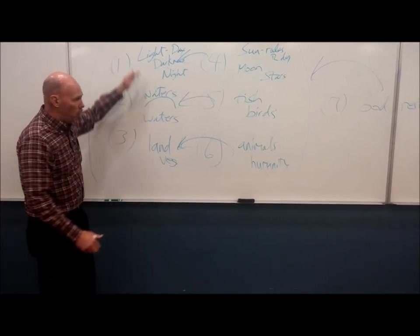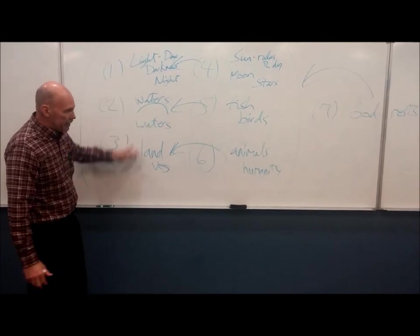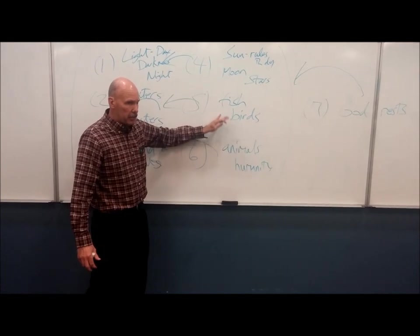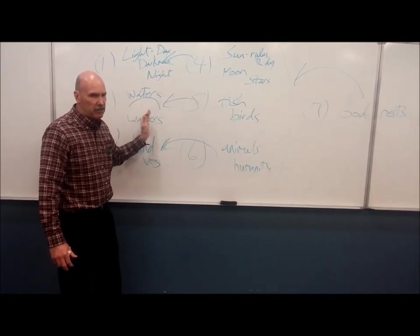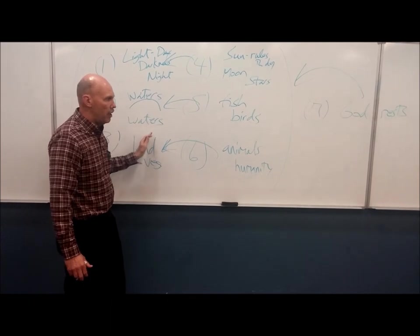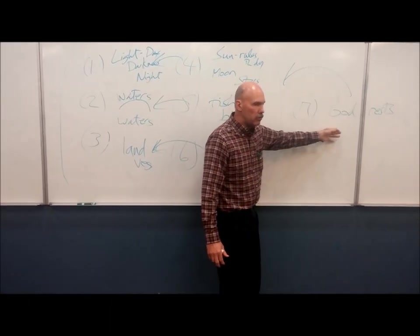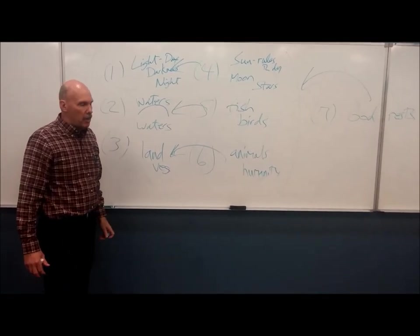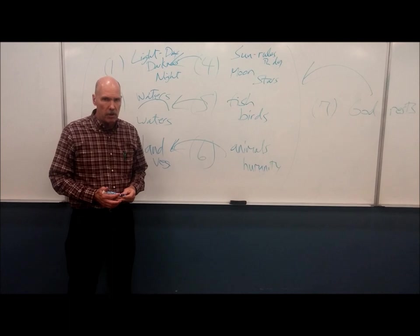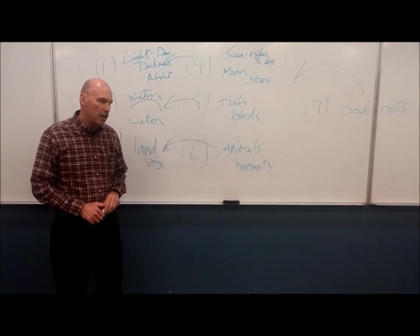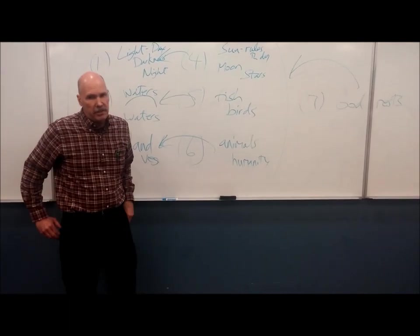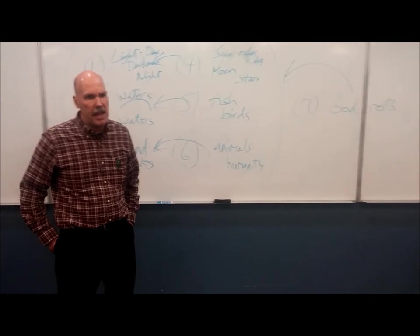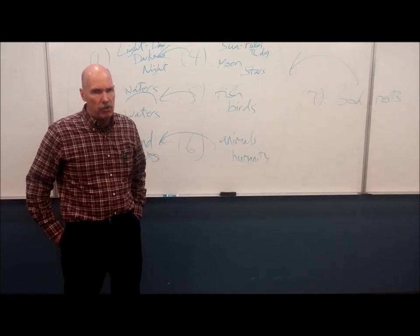So we see the structure: days 1, 2, and 3 creating habitats; days 4, 5, and 6 creating the creatures and bodies that are going to move in, fill those habitats, and exercise dominion over them; and then on day 7, God moves in and fills the whole creation with his presence. That's the big structure we see in Genesis 1:1 to 2:3. Now the next thing we need to talk about is what it means for us to be created in the image of God.